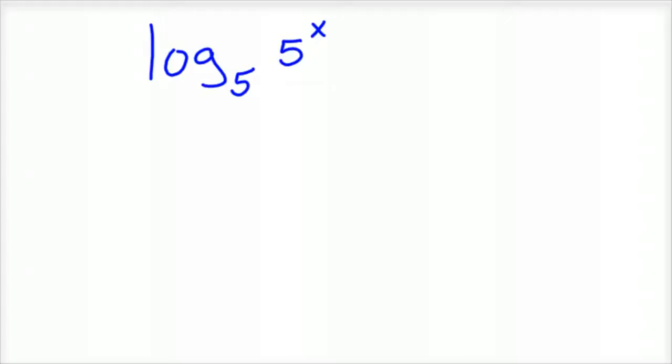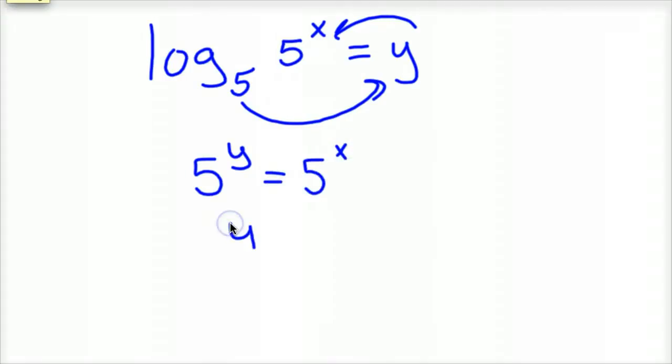So to prove that, let's let this equal to y and convert this to an exponent. So 5 to the y equals 5 to the x. Again, converting the logarithm to an exponent. And so I know y equals x.